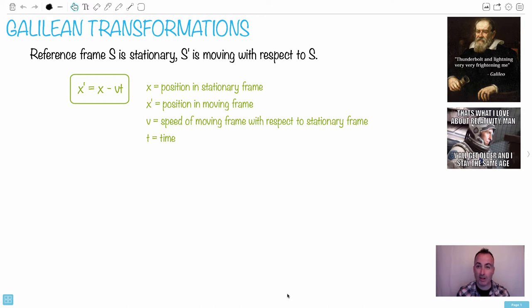I'll start off with this picture here of Galileo, and it says Thunderbolt and lightning, very, very frightening me. Do you know that song? That's a song by the band Queen. Really catchy, actually. And the next thing I have there, that's a scene, actually, from Interstellar. He says, that's what I love about relativity, man. Y'all get older, and I stay the same age. This is a juxtaposition here. This is a double meaning here.